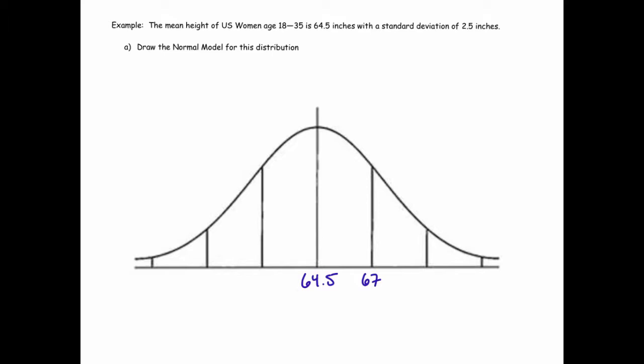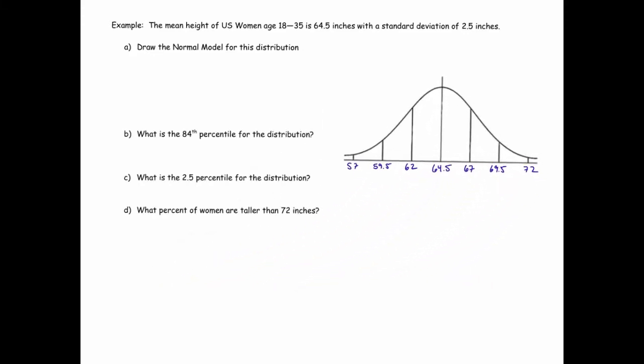Let's add another 2.5 to get to two standard deviations above the mean. We add 2.5 again and we'll get 72. And then let's subtract 2.5 once, that's 62. Again. And one more time. And now we are good to go. So this is just mapping that pattern we saw, the empirical rule, onto this particular example.